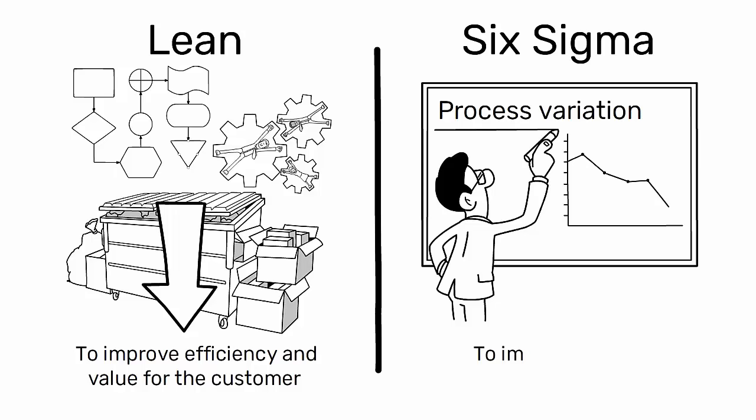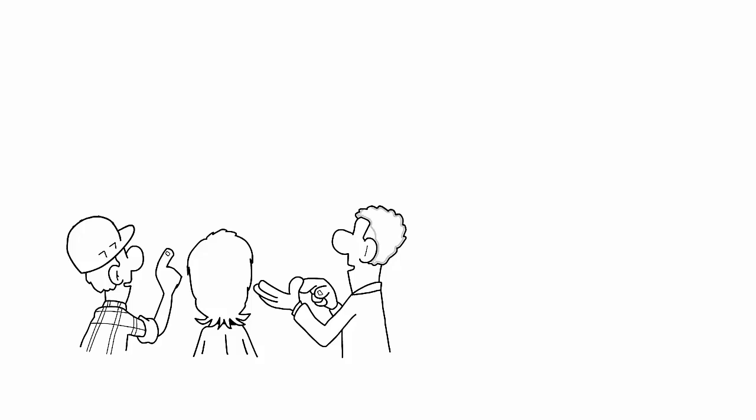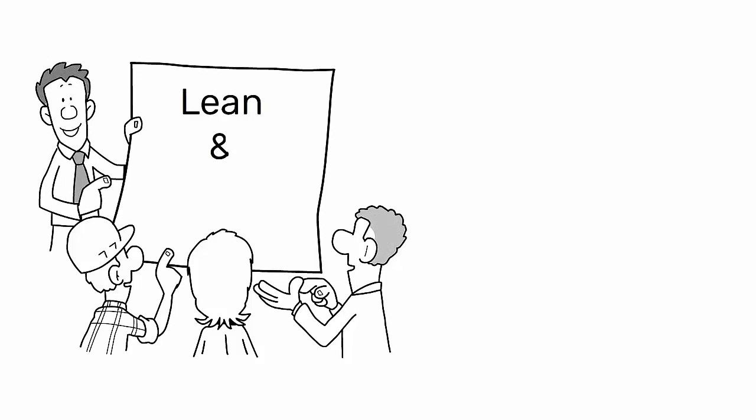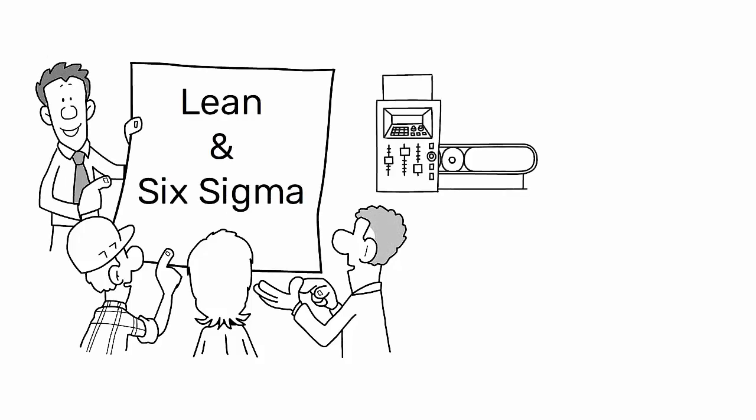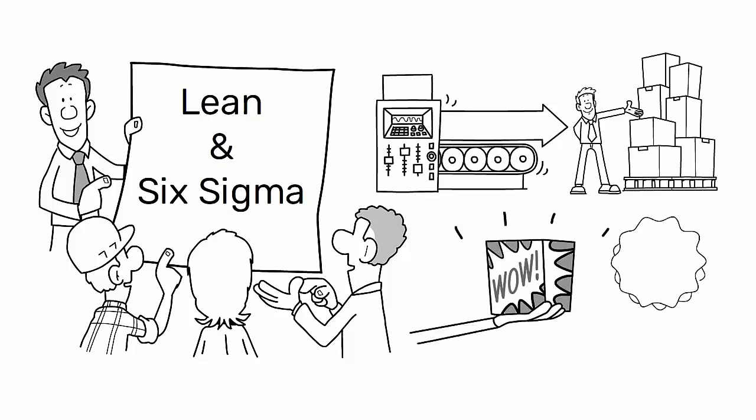However, they are not mutually exclusive and many organizations implement both methodologies to achieve their operational and quality goals. This combination is often referred to as Lean Six Sigma.